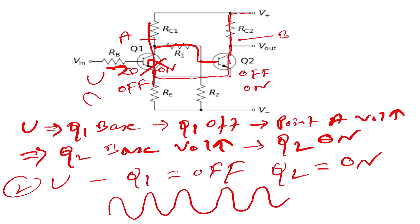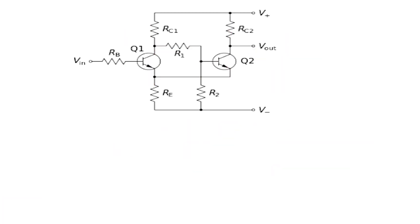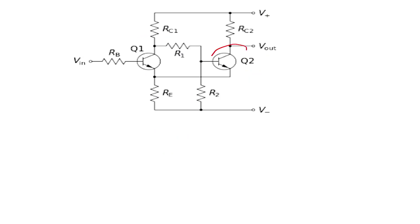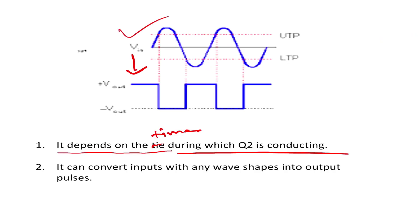This is important — what can we do with the output voltage? It depends on the time during which Qt is conducting. Qt is conductive, and this time depends on the output voltage. The time during which Qt is conducting is the key parameter.